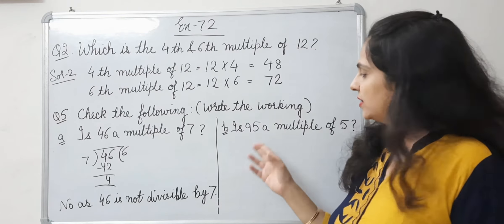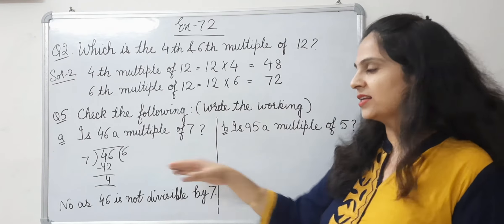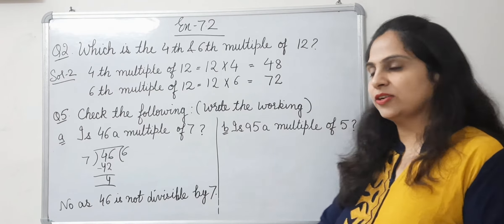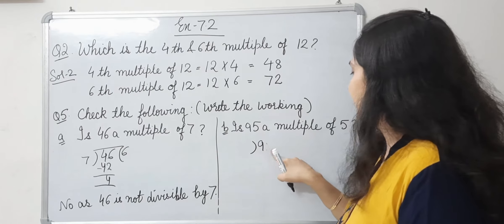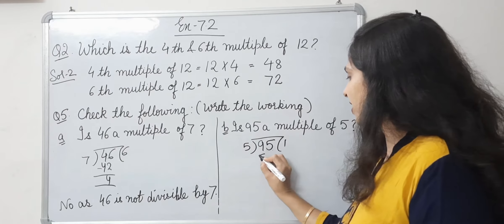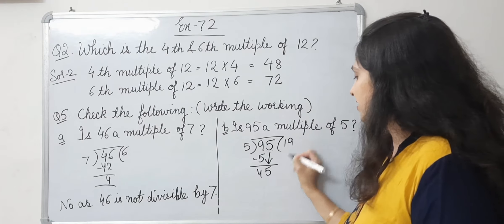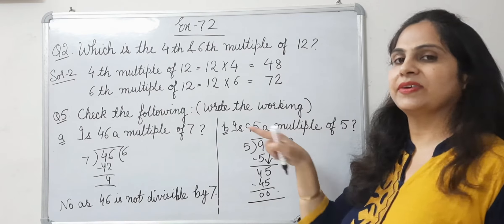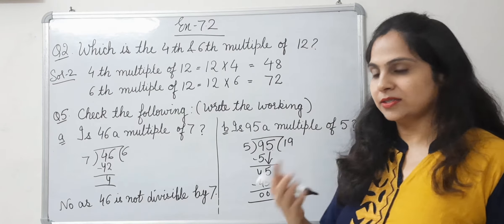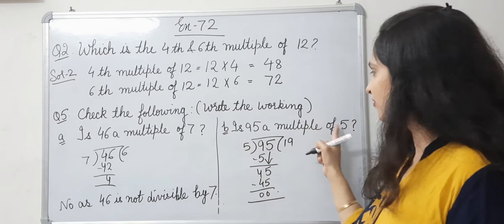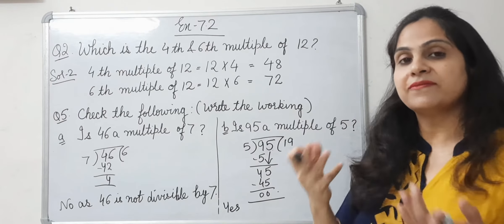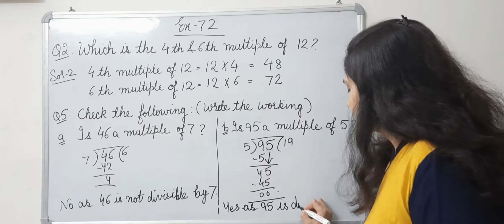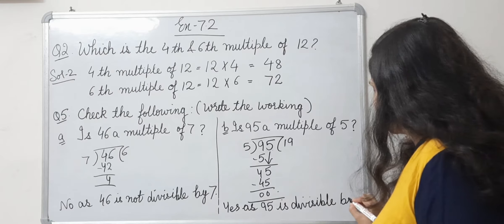Now let's do part B: is 95 a multiple of 5? We find out by dividing. 95 divided by 5: 5 9s are 45, so the remainder is 0. A remainder of 0 means 95 is divisible by 5. So the answer is yes — 95 is a multiple of 5, as 95 is divisible by 5.